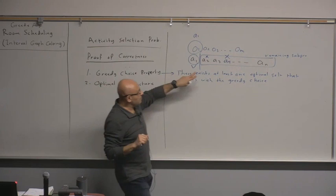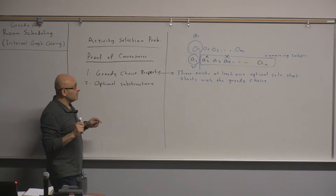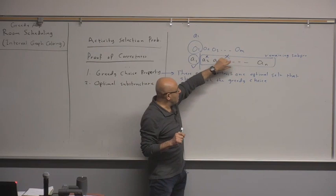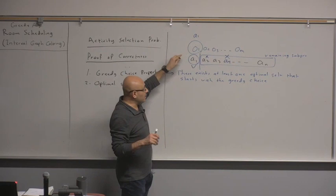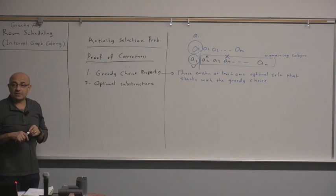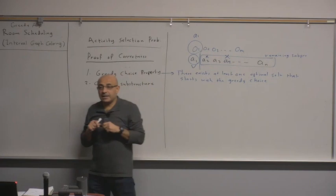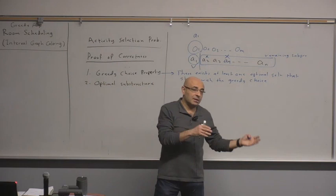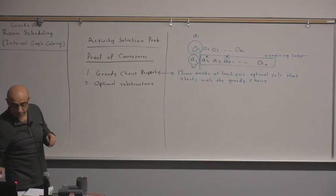We proved that for this particular problem — the activity selection — I can take an optimal solution to this subproblem and combine it with the greedy choice to construct a solution to the big problem. Now, in order to appreciate this, you have to see a problem that does not satisfy the optimal substructure — a problem where you cannot take an optimal solution to a subproblem and stick it to another optimal solution to another subproblem to construct an optimal solution to the big problem.